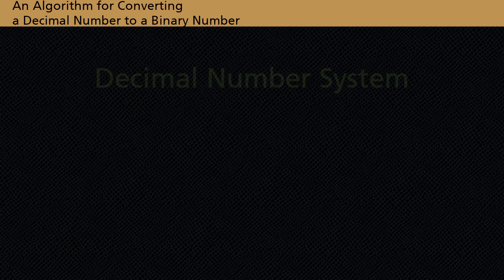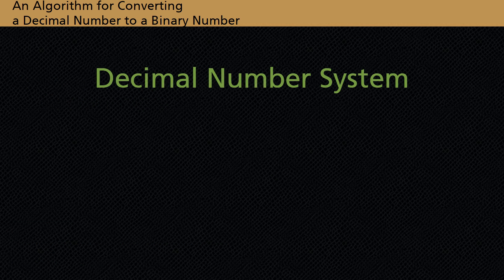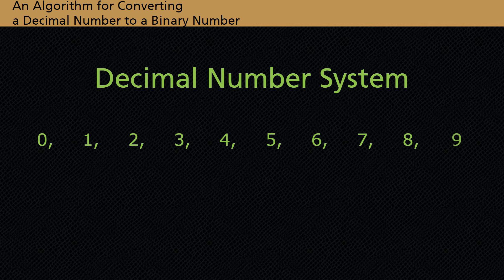The number system that we are familiar with is the decimal number system. It uses 10 digits: 0, 1, 2, 3, 4, 5, 6, 7, 8, and 9. It is a place value system where the value of each digit depends on its position in the number.